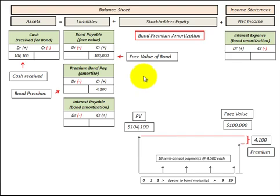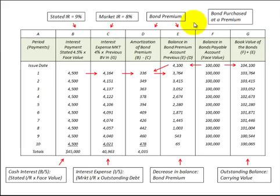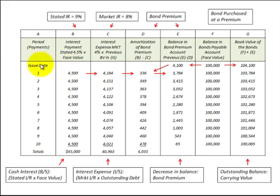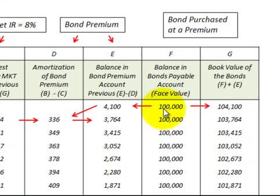Here is an amortization schedule for a bond purchased at a premium, laid out in table form with columns referenced above and a simple explanation for each calculation. We have the payment dates or periods — ten of them, representing a five-year bond with semi-annual payments. What we need to concentrate on is the interest expense we have to recognize for this bond and the amortization of the bond premium.